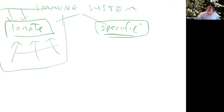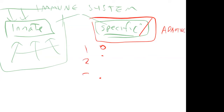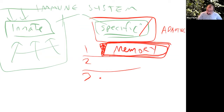Specific, or adaptive immunity, is what we're going to spend a little more time on before we move on to the digestive system. There are three main characteristics. First, it has memory — once you've been exposed to a particular antigen, you create memory cells. If you ever see that same antigen again, you can have a much faster and stronger response. That's how we get immunity and that's what vaccines take advantage of — they expose you to something so if your body ever encounters it again, you won't get sick.